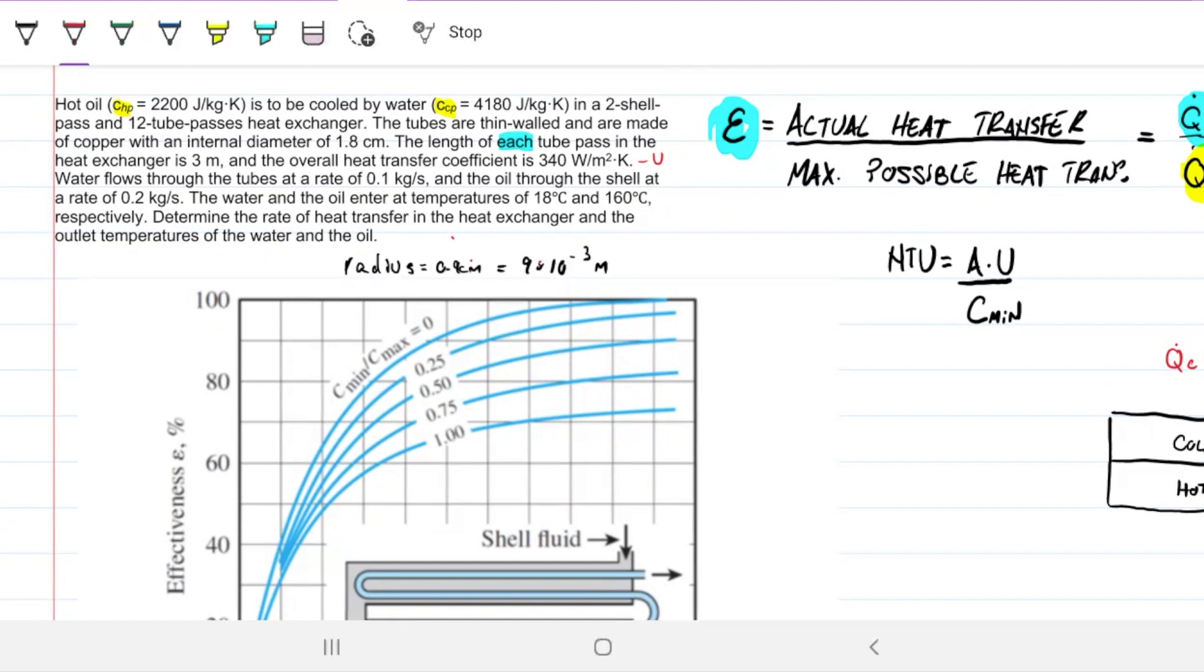Determine the rate of heat transfer in the heat exchanger and the outlet temperatures. So three things for us to determine: the Q, the rate of heat being exchanged, the outlet temperature of the hot, and the cold out.